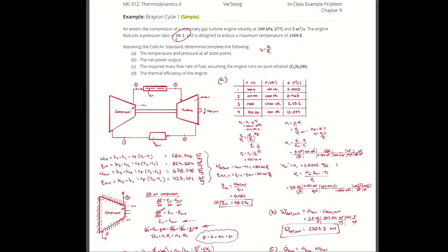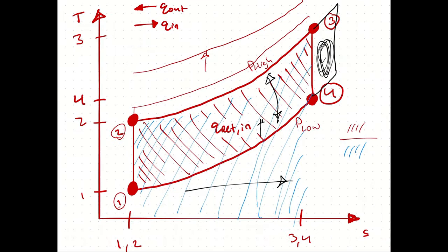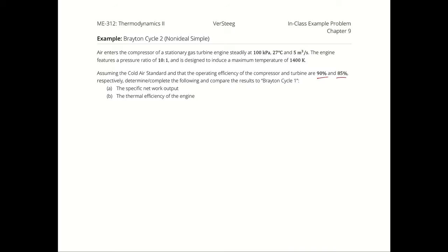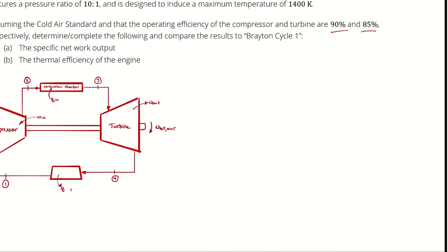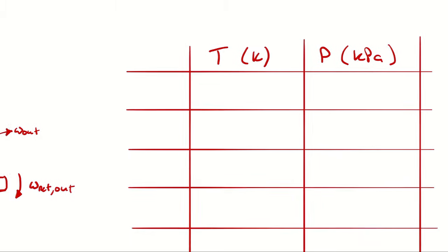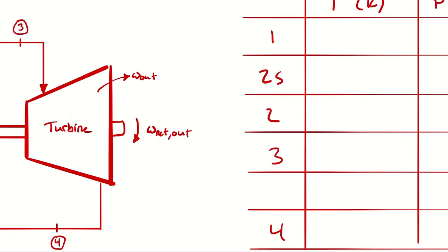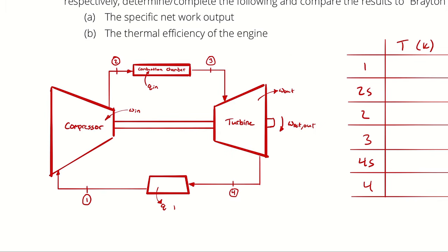So I will bring over my diagram because it's going to be the same engine. The only difference here is that I have to establish 6 state points. Which 6 state points, I hear you ask? Well, we have 1 and 2 still. And we have 3 and 4 still.